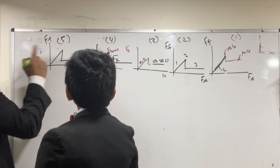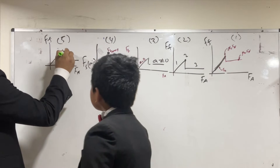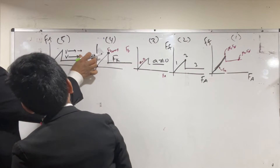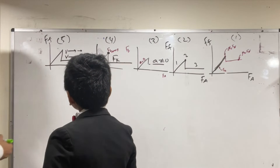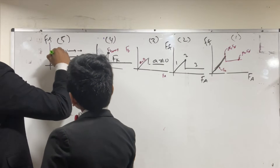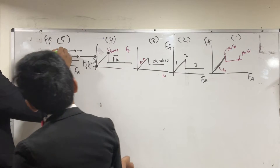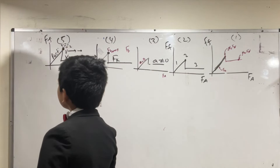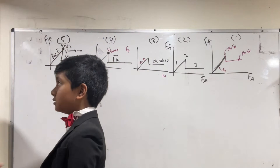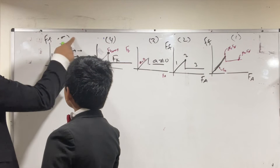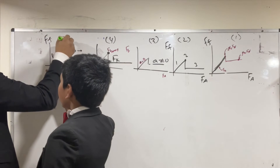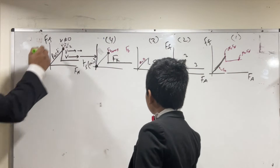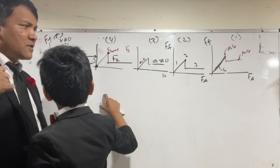On graph five, what happens to velocity? Velocity can decrease, velocity can increase. Here, velocity doesn't increase and doesn't decrease — the object is at rest. In this region, velocity is constant — it could be one, two, or three — but velocity cannot be zero on this portion. Think of it like a car in motion.